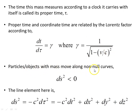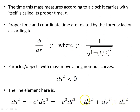Particles with mass move along non-null curves, so ds² is less than zero for those. The line element for an object with mass is ds² = −c²dτ², which equals this object here. There is a separate video on Lorentz factors, so I won't go into that here, but the line element is given by this. dτ is the proper time measured by the mass carrying a clock, so just be careful with that.